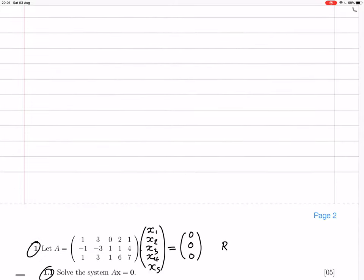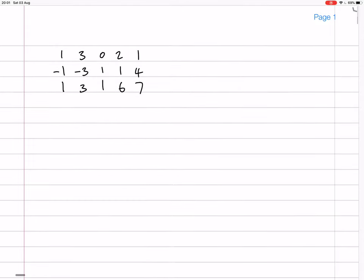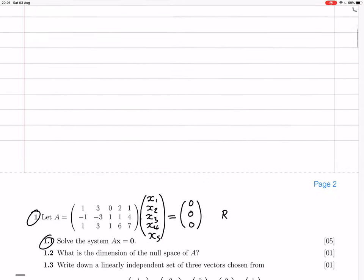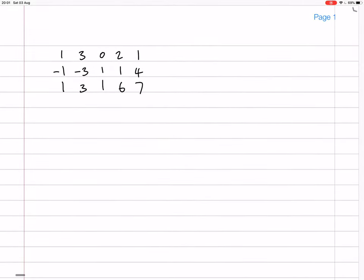Let me check that. First row: 1, 3, 0, 2, 1. Second row: minus 1, minus 3, 1, 1, 4. Third row: 1, 3, 1, 6, 7. Yes, that's good. So it's this matrix times the 5-row vector x equals the zero vector.